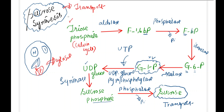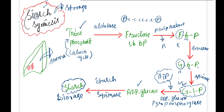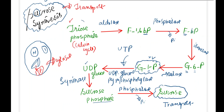In this way, we have studied both synthesis processes — of sucrose and starch — in great detail. We saw that the precursor for both, from which the process starts, is triose phosphate. And that's all for today. I hope this lecture was explained in great detail and you have understood everything. Take care.